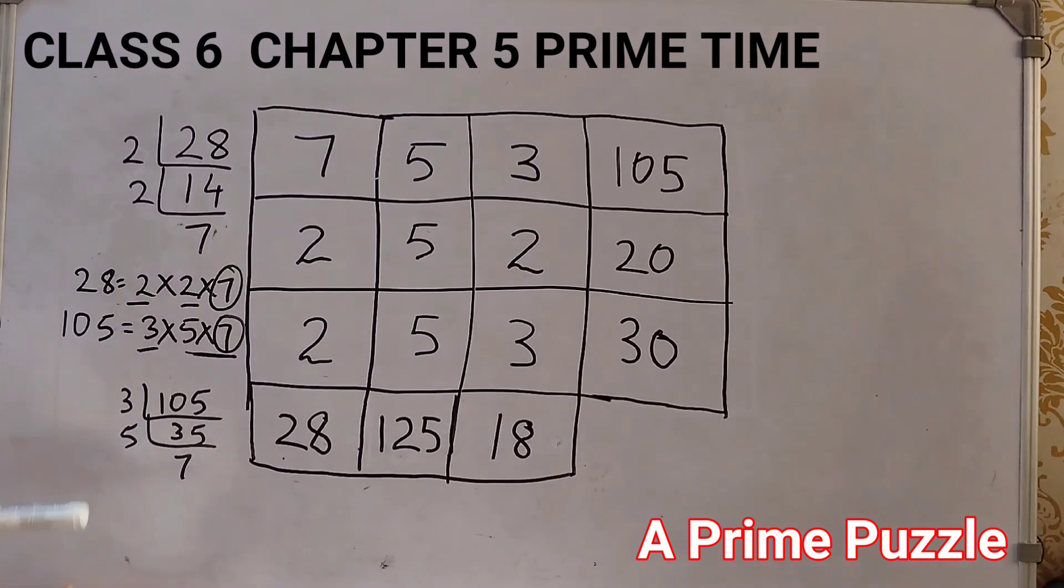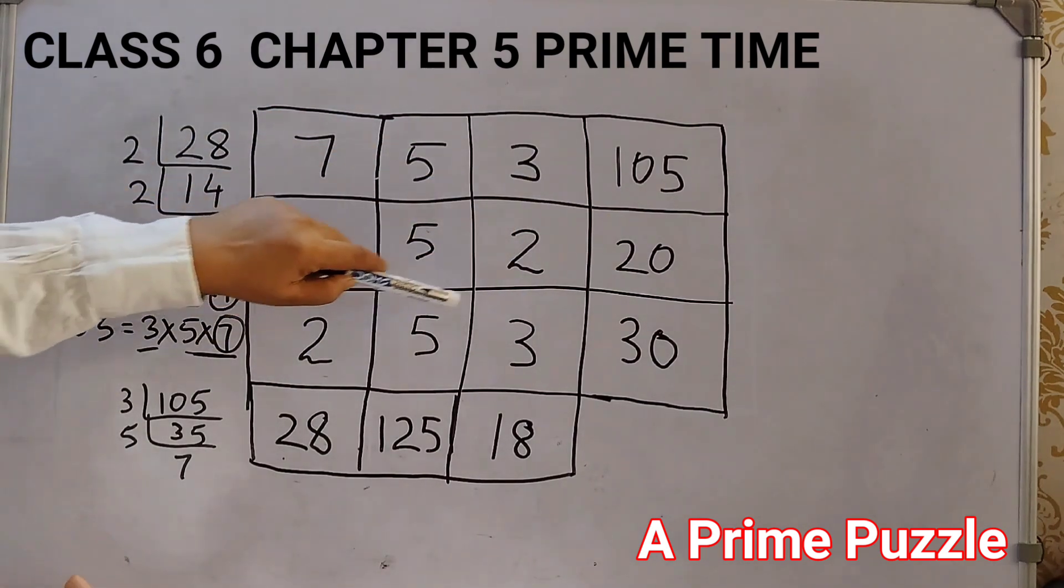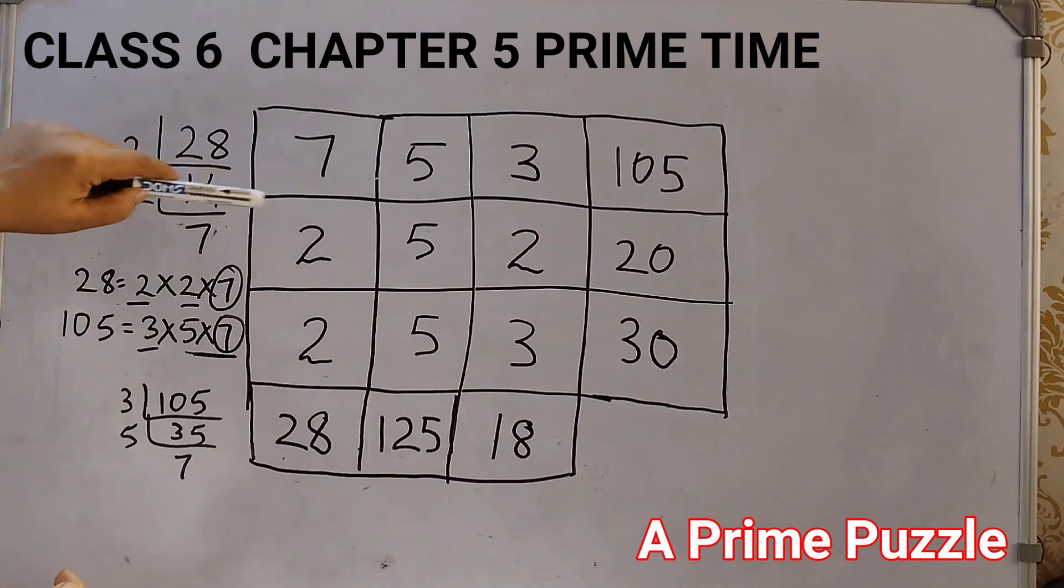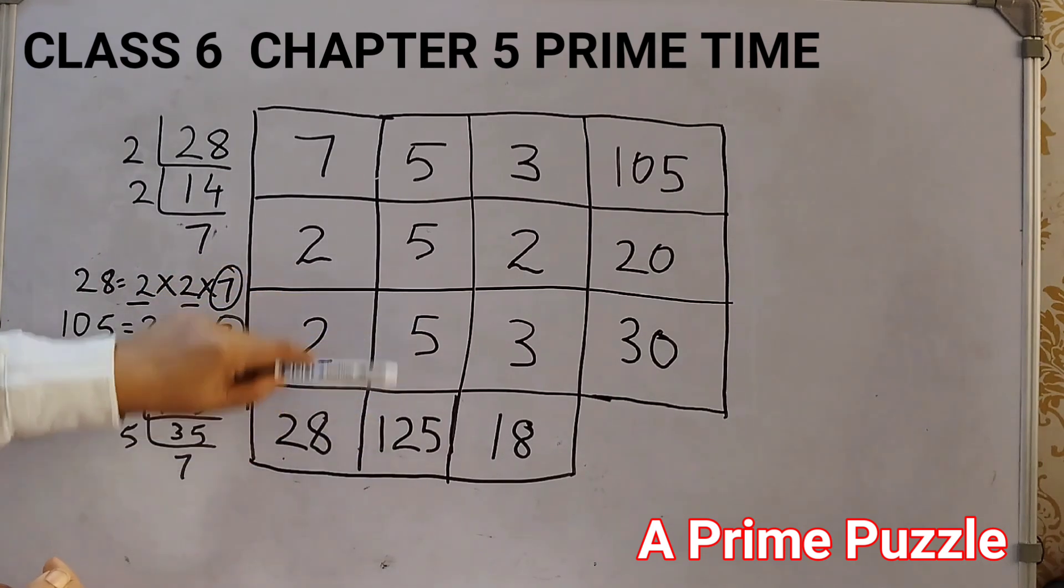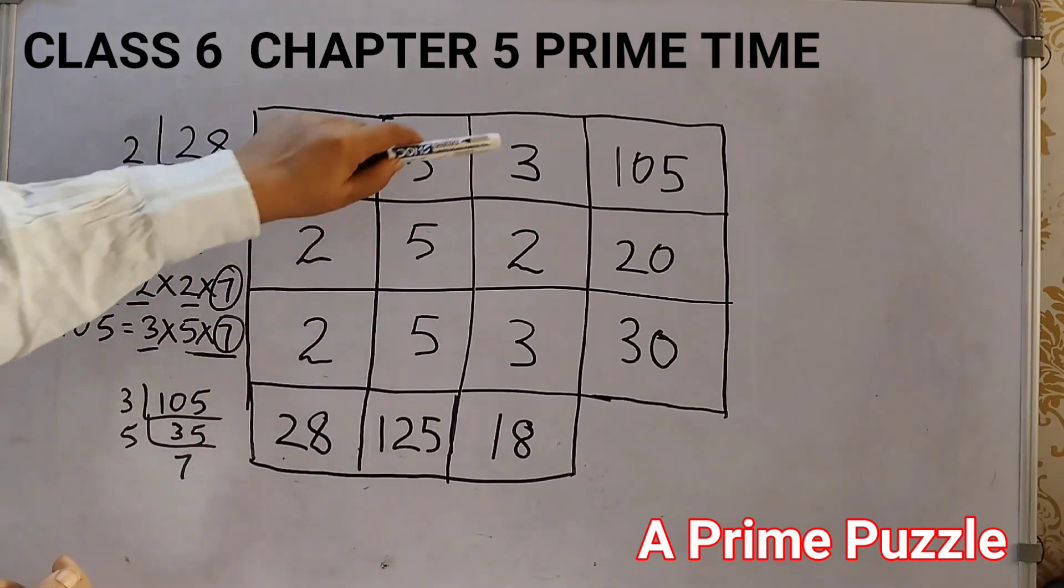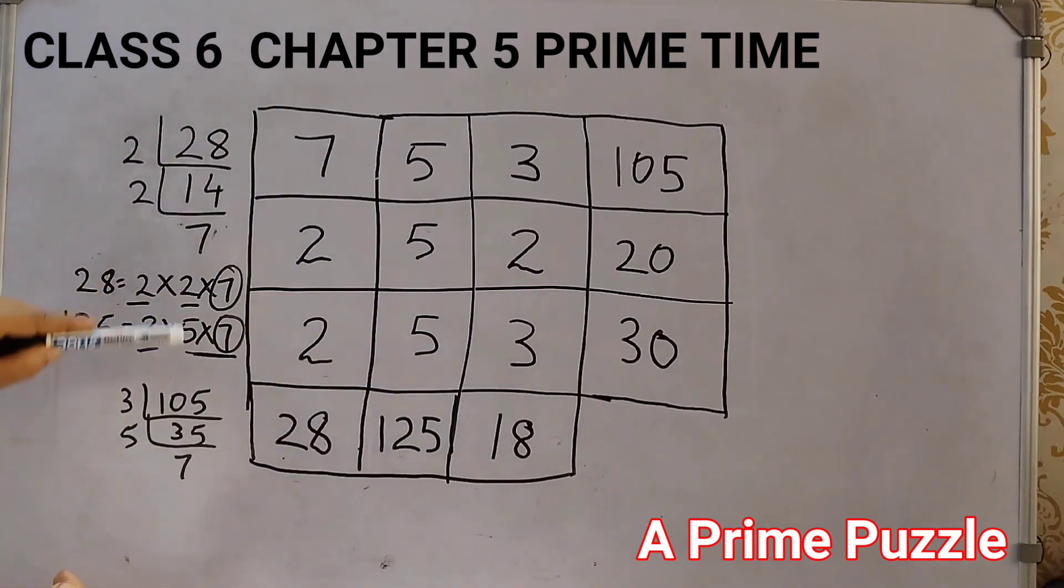Now, we can just cross check if that is correct. 7 5s are 35, 35 into 3, 105. 2 5s are 10, 10 2s are 20. 2 5s are 10, 10 3s are 30. All rows done. Now, columns. 7 2s are 14, 14 2s are 28. This is already we know, it is 125, 5 into 5 into 5. And 3 2s are 6, 6 3s are 18. So, we have filled up the grid with prime numbers. And this is how you need to solve this puzzle.